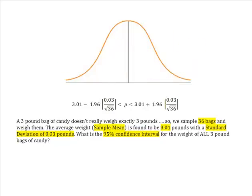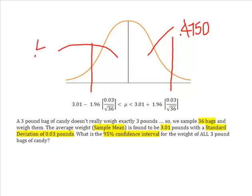at 95%, I end up with 0.4750% here. And on this side, because this curve is uniform, 0.4750 here.